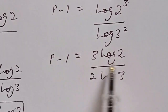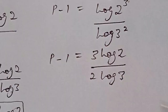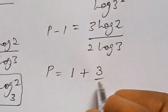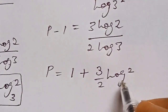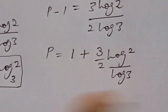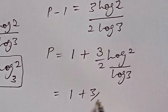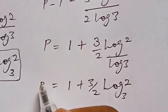So we have p minus 1 equals 3 log 2 over 2 log 3. Adding 1 to both sides eliminates the minus 1, giving p equals 1 plus (3/2) times log 2 over log 3. This can simply be written as p equals 1 plus (3/2) log 2 base 3, which is our value of p from the shortcut method.